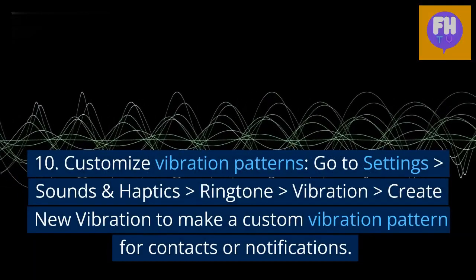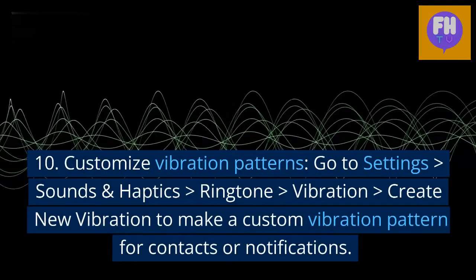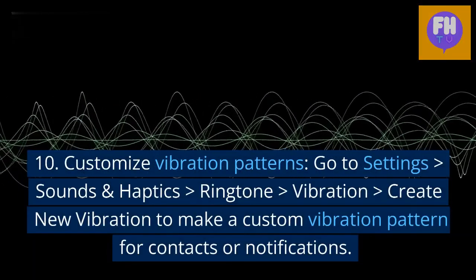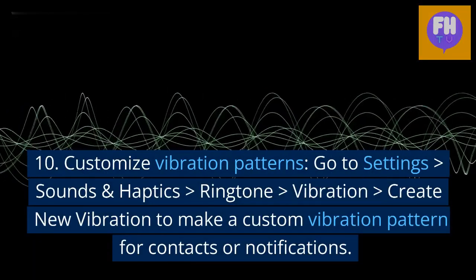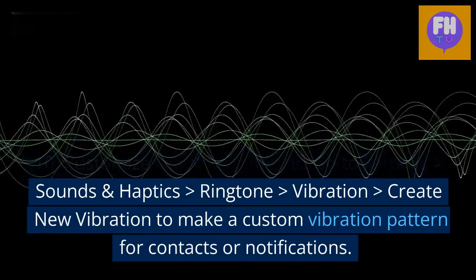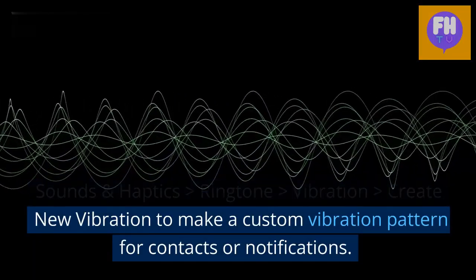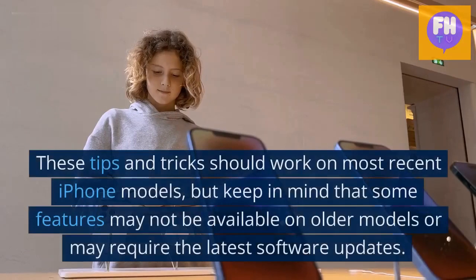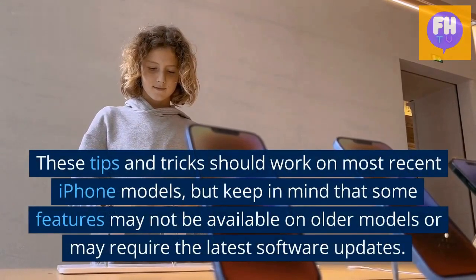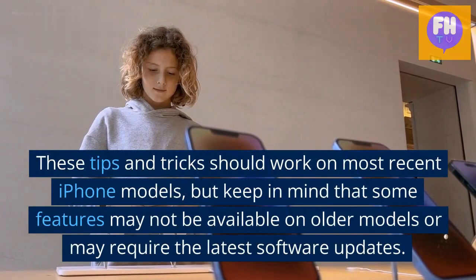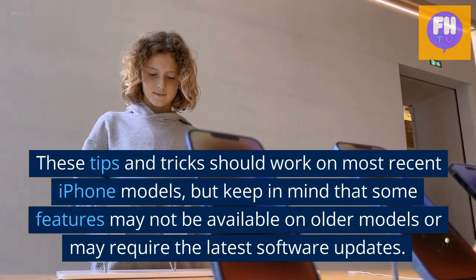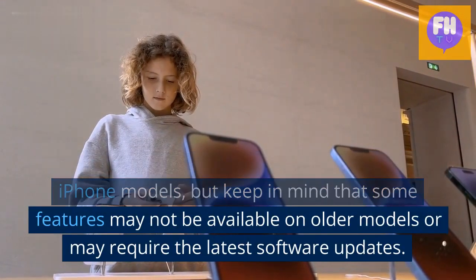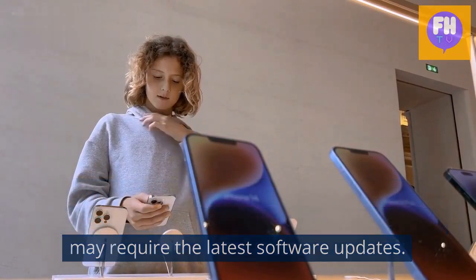10. Customize vibration patterns: go to Settings > Sounds & Haptics > Ringtone > Vibration > Create New Vibration to make a custom vibration pattern for contacts or notifications. These tips and tricks should work on most recent iPhone models, but keep in mind that some features may not be available on older models or may require the latest software updates.